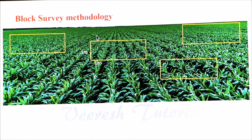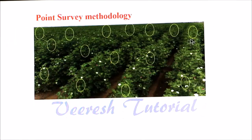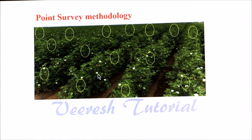In block survey methodology, over an area we select certain blocks of a fixed size, say one by one meter. In that area we count the total number of healthy plants and total number of affected plants to calculate the percent of plants affected based on the damaging symptoms. In a point survey methodology, we select 20 plants randomly in an area, and from each plant we record the number of insect pests or affected plant parts.